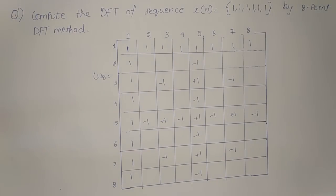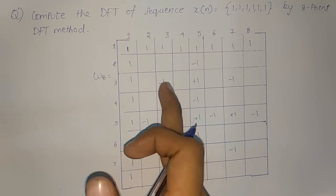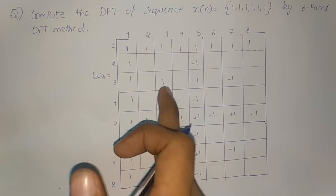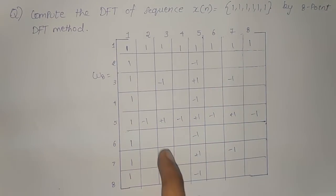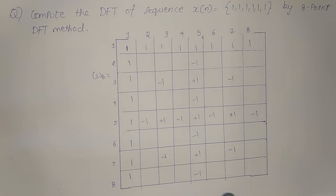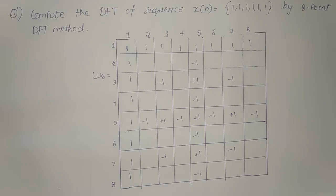Now you have to surround all the minus ones — that is the center of the nine boxes — by diamond-shaped J's. It should be surrounded by J's in a diamond fashion.